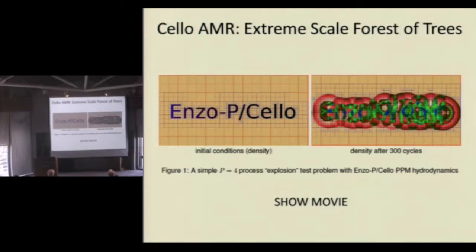So this is actually two pieces of software. Cello is an extreme scale AMR infrastructure. And when I say extreme scale, I expect it to take us to 10 million cores or beyond. That was the design point. Exascale. And then Enzo-P is an astrophysics application built on top of Cello. In the same way that Flash is built on top of Paramesh, Enzo-P is being built on top of Cello.